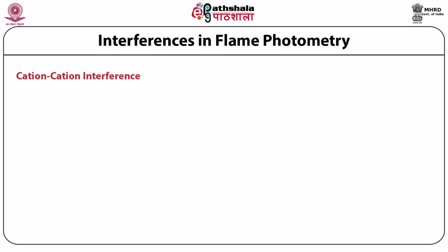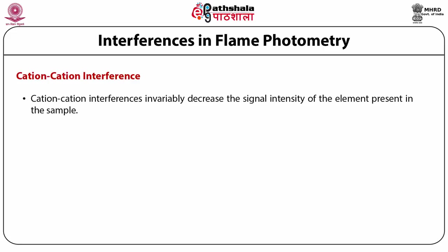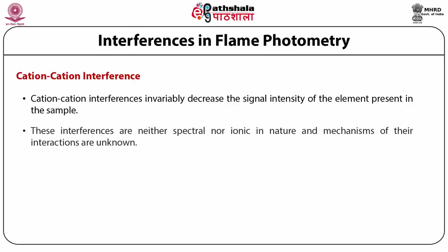Cation-cation interferences: mutual interferences of cations have been observed in many cases and invariably decrease the signal intensity. These interferences are neither spectral nor ionic in nature and their mechanisms are unknown. An example is that aluminum interferes with calcium and magnesium, and sodium and potassium have cation-cation interferences with one another.